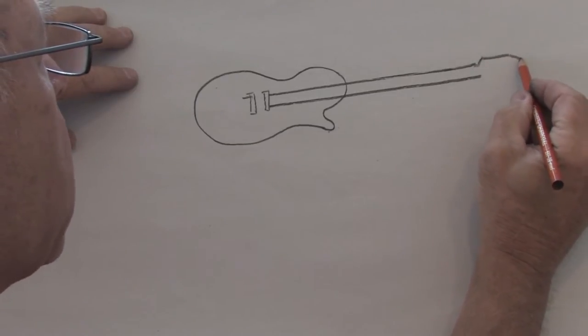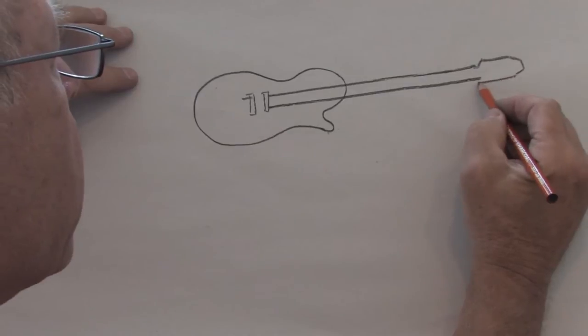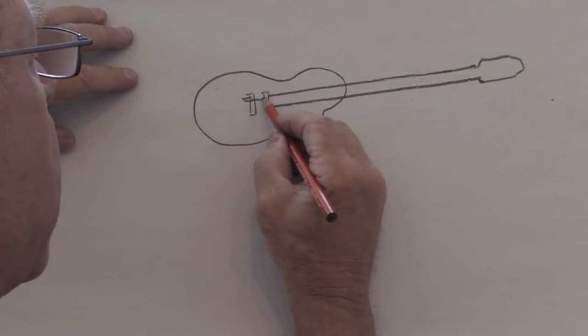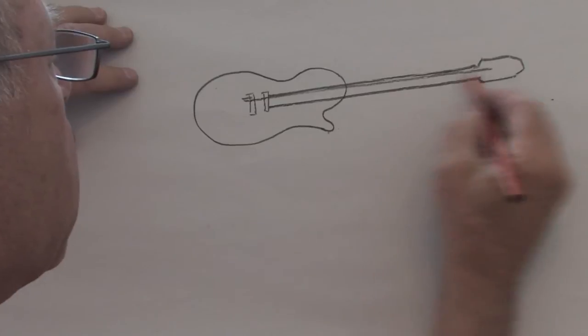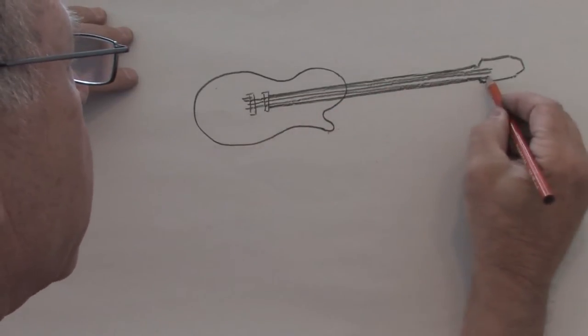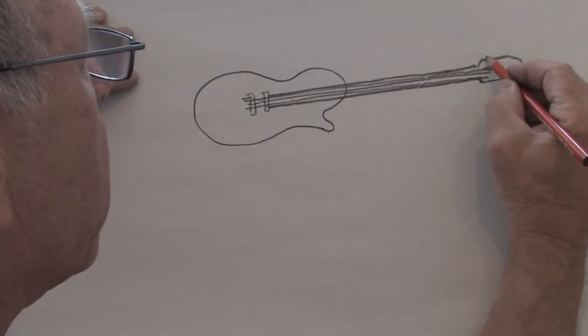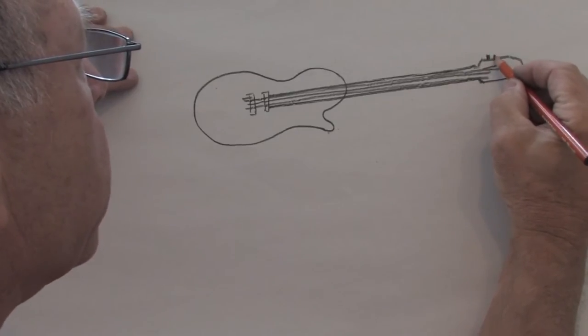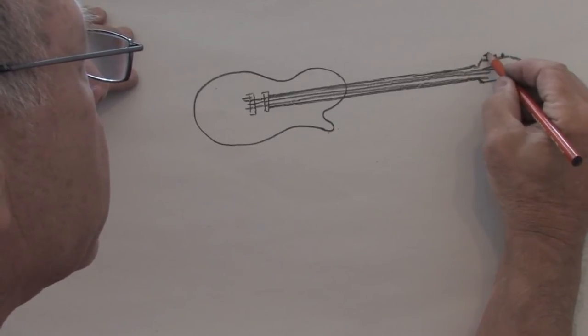Over here we have a shape that looks something like this out to the end. The strings would come across the guitar just like that, straight across. At the end here would be these little thumb screws.